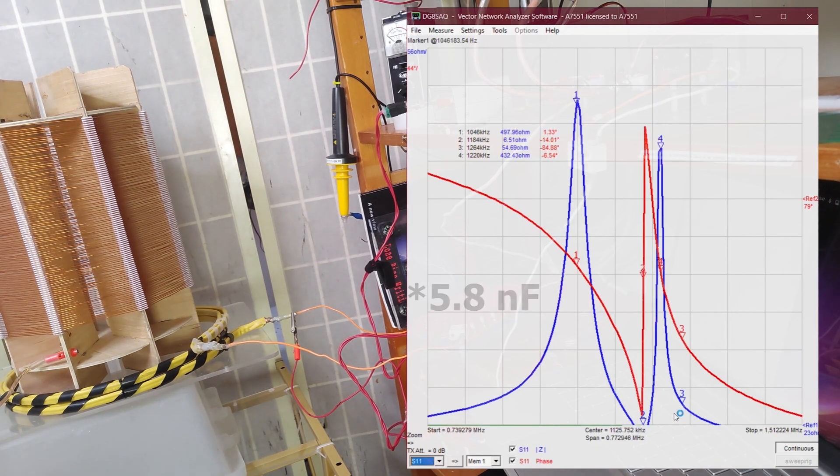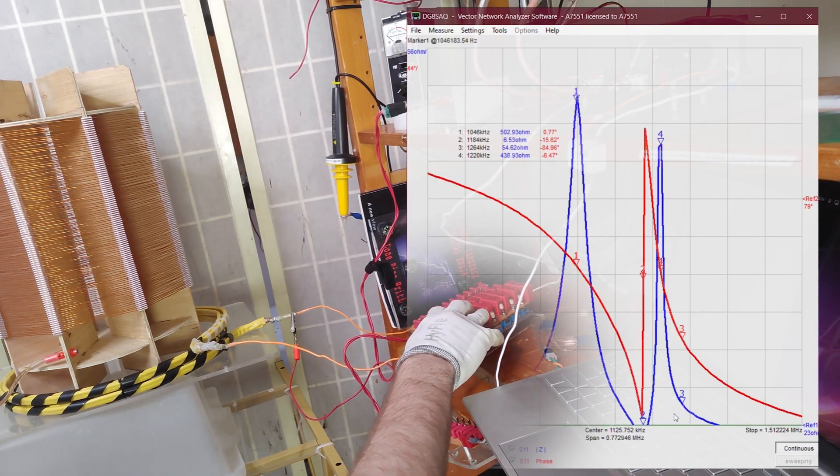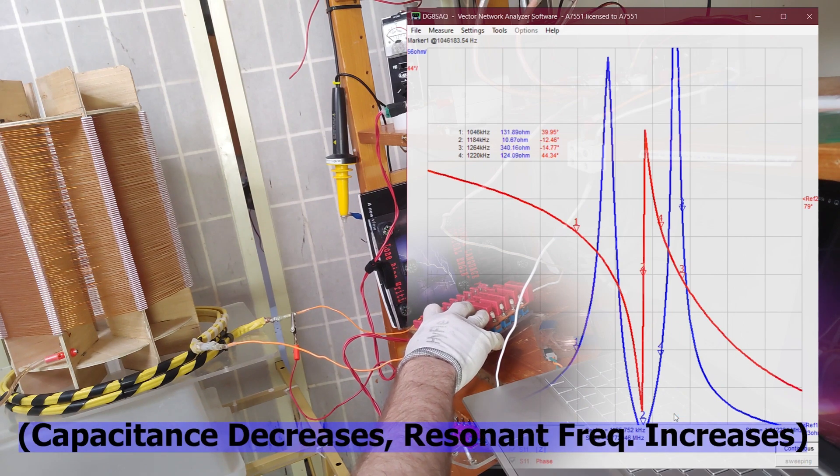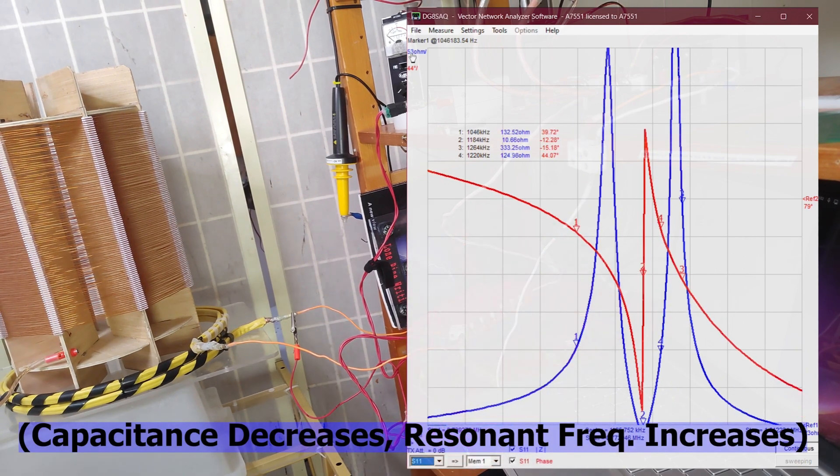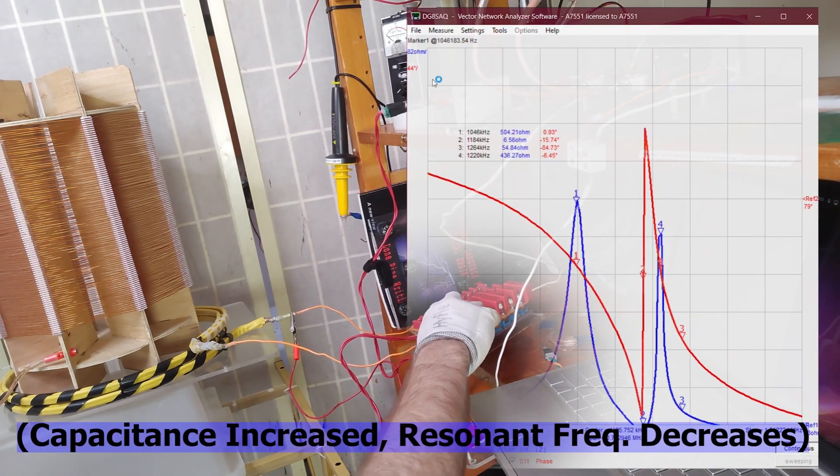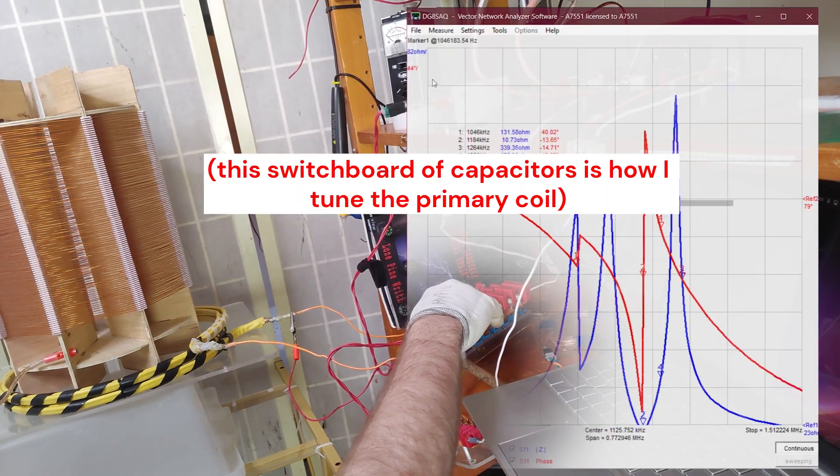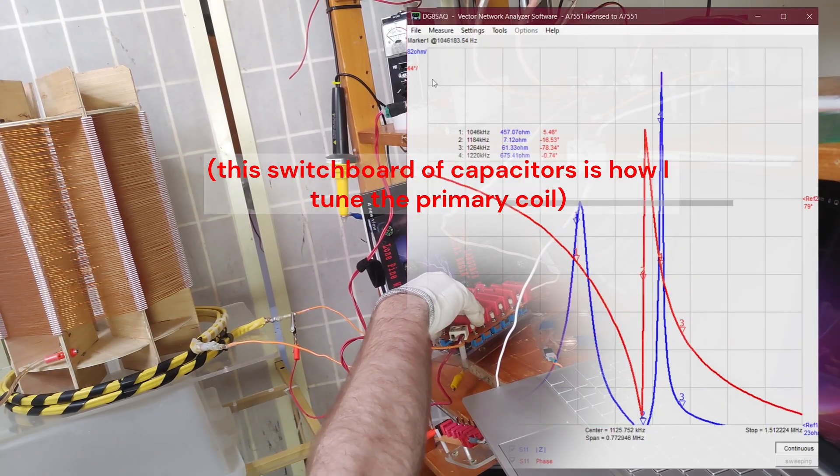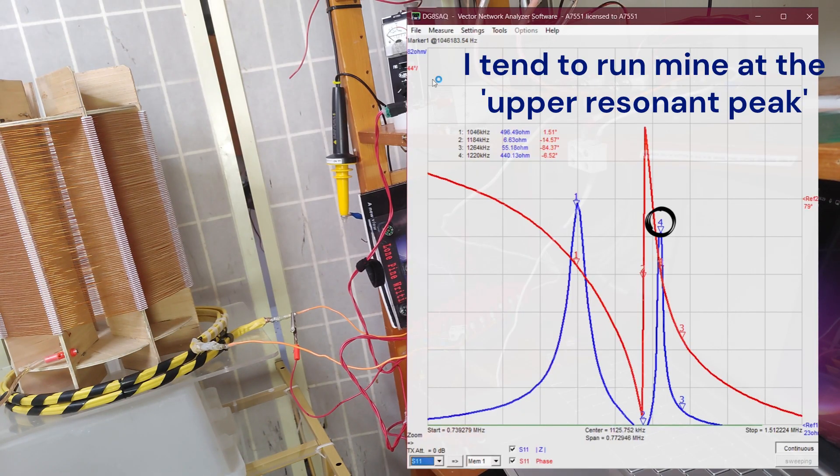This has got 5.8 nanofarads primary tank circuit parallel capacitance. What happens if we bump that down one? The points go up. So if we're seeking equal amplitudes of the blue spikes, this seems to be a fairly sweet spot at 5.8 nanofarads in the primary tank circuit.